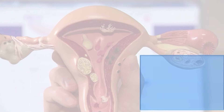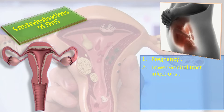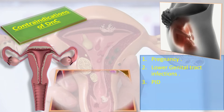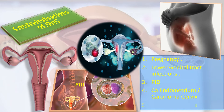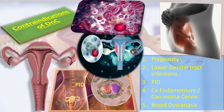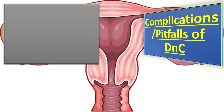The contraindications of D&C include pregnancy, lower genital tract infections, PID, carcinoma of the endometrium, carcinoma of the cervix, and blood dyscrasias.